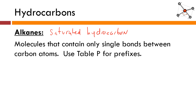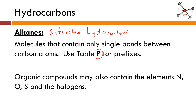Naming and drawing compounds is going to be a really huge aspect of this unit, and New York State has given you some help. If you've got your reference table, take a look at Table P. You've got prefixes for different numbers of carbon atoms. For example, if the compound has one carbon atom, it gets the prefix meth; two carbon atoms, the prefix eth; three is prop; four is but, and so on. Organic compounds are also able to contain other elements — a lot of times we'll see nitrogen, oxygen, sometimes sulfur, phosphorus, and the halogens. We'll save those for another day.